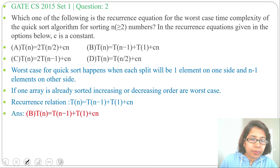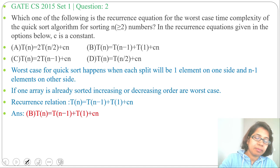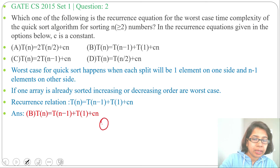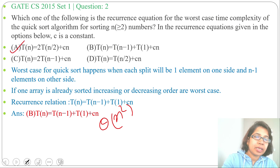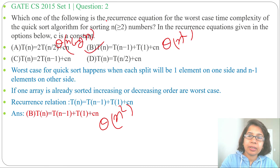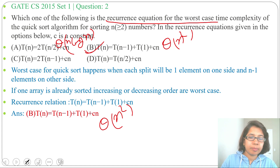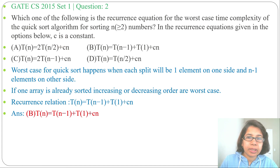So the answer is T(n) = T(n-1) + T(1) + cn, which is the worst case recurrence relation. For this recurrence relation, the running time is Θ(n²). For the best case recurrence relation, the running time is Θ(n log n). Since the question asks for the worst case recurrence equation, the answer is Option B. If this lecture was helpful, please like and subscribe.